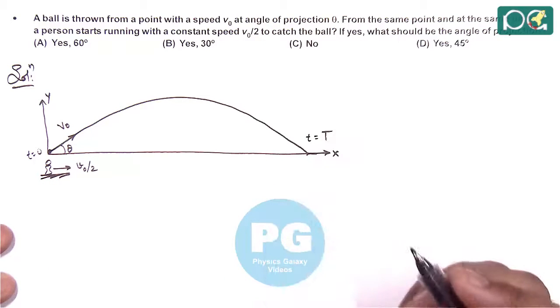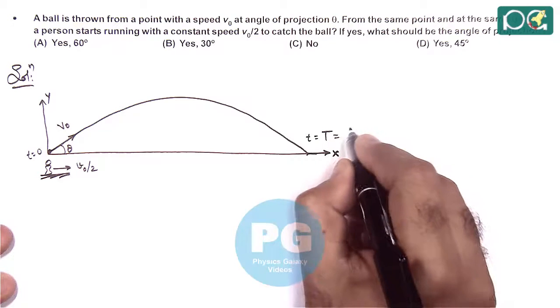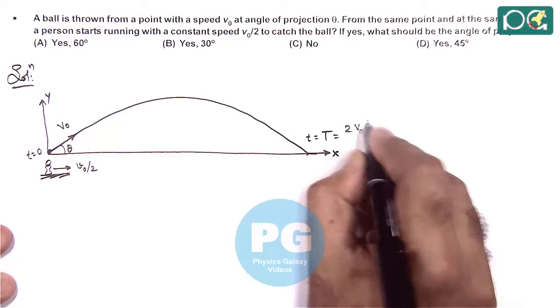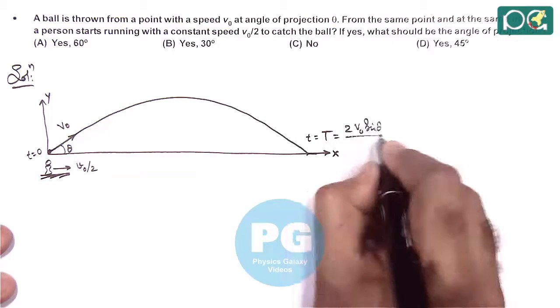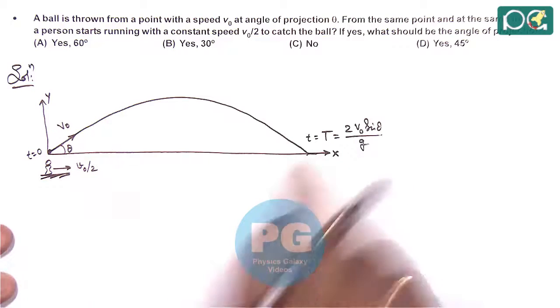which is time of flight. And at time of flight, we know it is given as 2 V-naught sine theta by g. This is the time after which the ball will land back again on ground.